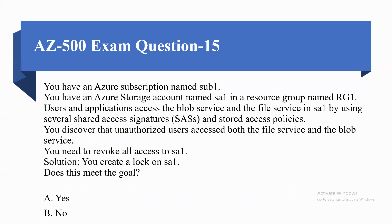Coming to the next question. You have an Azure subscription named Sub1, an Azure storage account named SA1 in resource group Archiva. Users and applications access the Blob service and the File service in SA1 by using several shared access signatures and stored access policies. You discover that an unauthorized user accesses both the File service and the Blob service. You need to revoke all access to SA1. The solution provided is: you create a lock on SA1. Does this solution meet the goal?